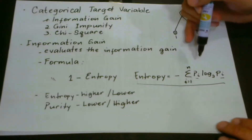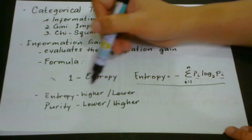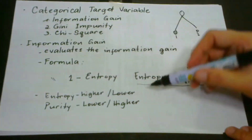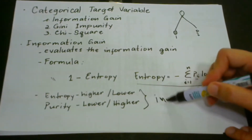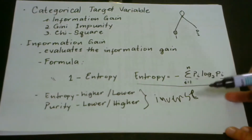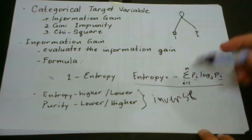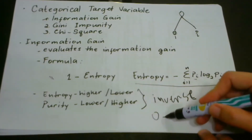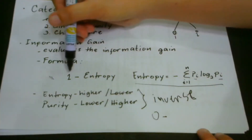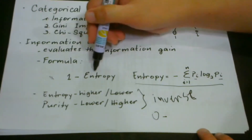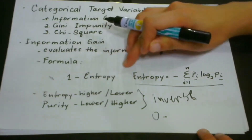When the entropy is higher, the purity is lower. When the entropy is lower, the purity is higher — there is an inverse relationship. Just like reduction in variance, when our entropy is 0, it means we have a perfect homogeneous node. Because we have deducted the entropy from 1, the information gain is higher for purer nodes, with a maximum value of 1.